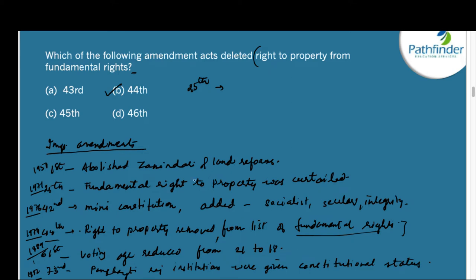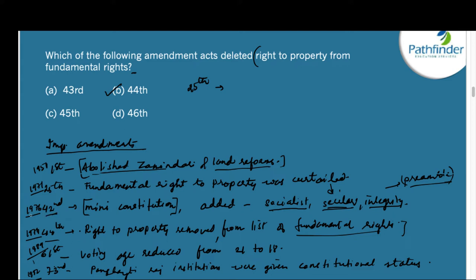There have been many important amendments to the Constitution in India. The 1st Amendment abolished zamindari and was responsible for land reforms necessary at independence. The 25th Amendment curtailed the fundamental right to property. The 42nd Amendment, also known as the mini constitution due to extensive changes, added the words socialist, secular, and integrity to the preamble of the Constitution. The word secular was not the original part of our preamble — it was added only via the 42nd Amendment in 1976.